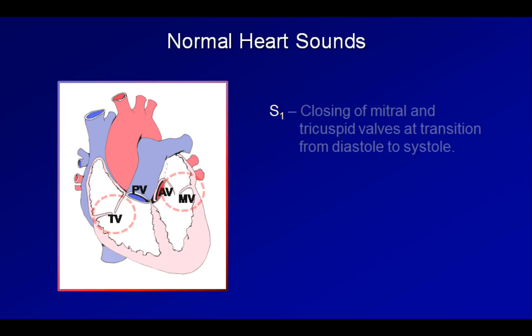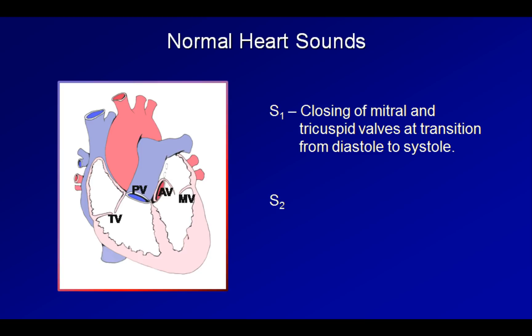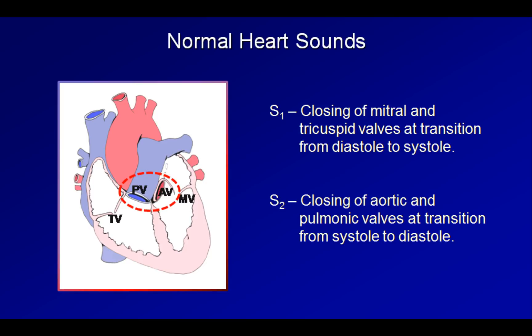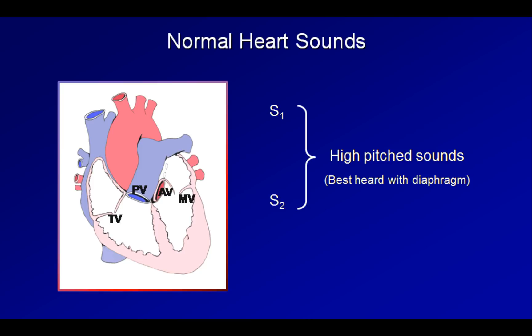The second normal heart sound is called S2. S2 is caused by and occurs essentially simultaneous to the closing of the aortic and pulmonic valves at the transition from systole back to diastole. Together, S1 and S2 form the lub-dub of the heartbeat. Both S1 and S2 are relatively high-pitched sounds. Although the pitch of S2 can be lower than S1, both are still best heard with the diaphragm of the stethoscope. Let's take a closer look at each.